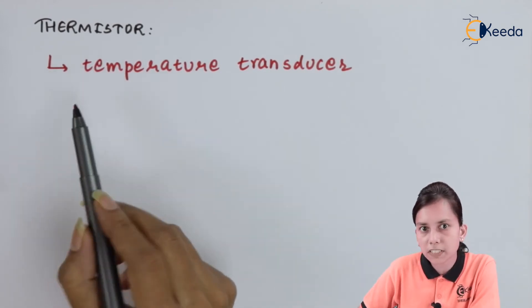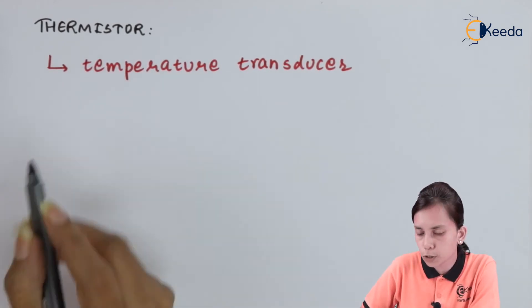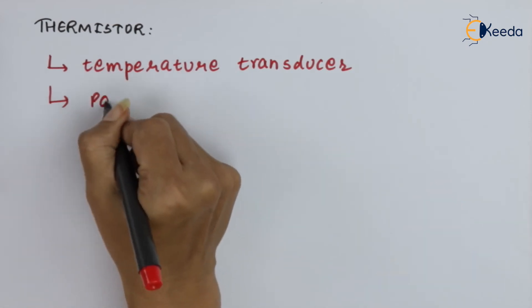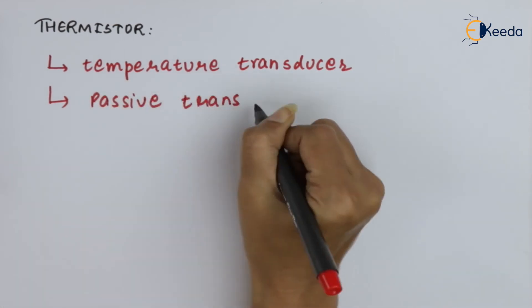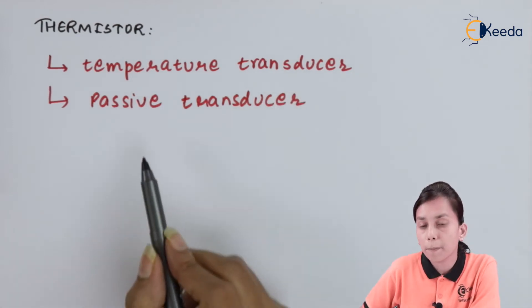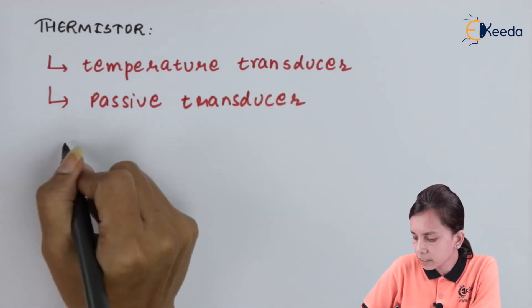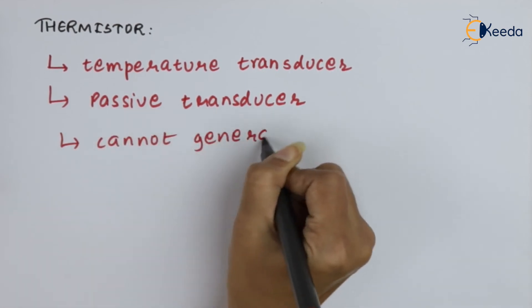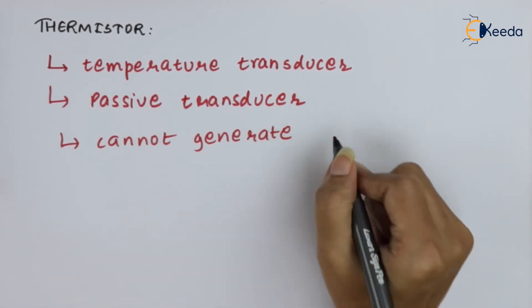So to summarize: the thermistor is a temperature transducer, it is a passive transducer, and it cannot generate self-energy.